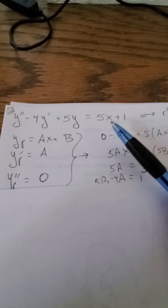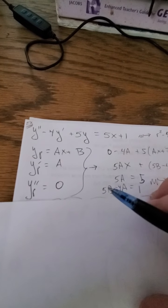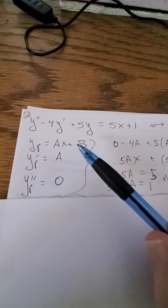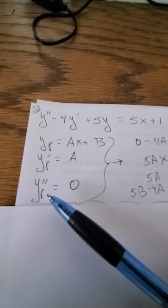So because of the 5x plus 1, that's a first-degree polynomial, so yp is also going to be a first-degree polynomial. yp equals ax plus b, which means yp prime is a, and yp double prime is 0.